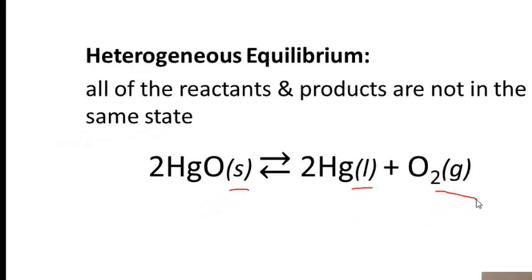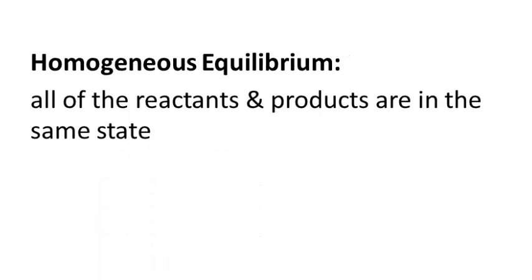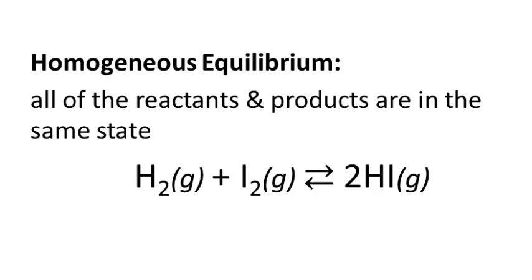Similarly, calcium carbonate solid decomposes to form calcium oxide solid and carbon dioxide gas. Once again, this is heterogeneous because we have more than one state — solid, solid, and gas. A homogeneous equilibrium means all the reactants and all the products are in the same state. Referring back to the earlier reaction, hydrogen gas and iodine gas forming hydrogen iodide gas — every reactant and every product is in the same state, all gas, so this is a homogeneous equilibrium.